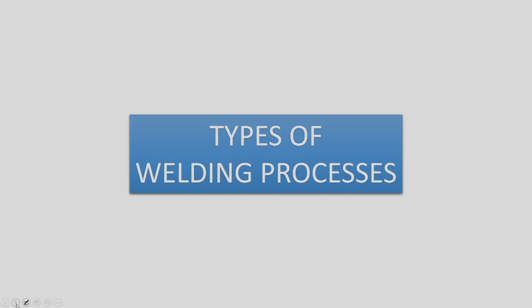We have seen various types of joints in welding operation. Now let us see what are the various types of processes being used in the industry, and then we will study the laser welding process. Welding in a broad sense can be classified into a variety of classes — there are many versions of classification — and here we will just look at it in a broad sense of manufacturing.